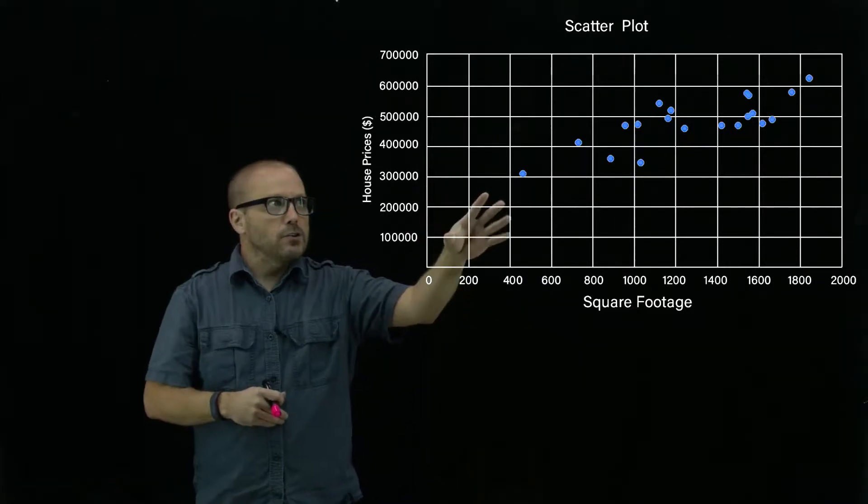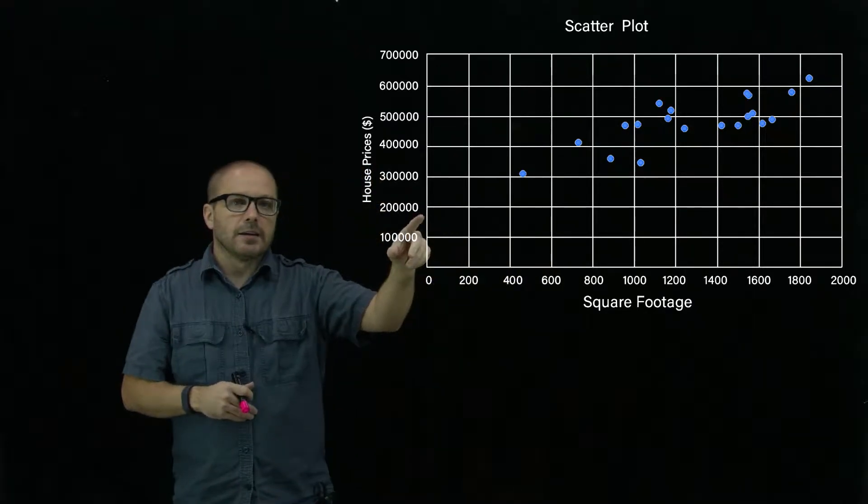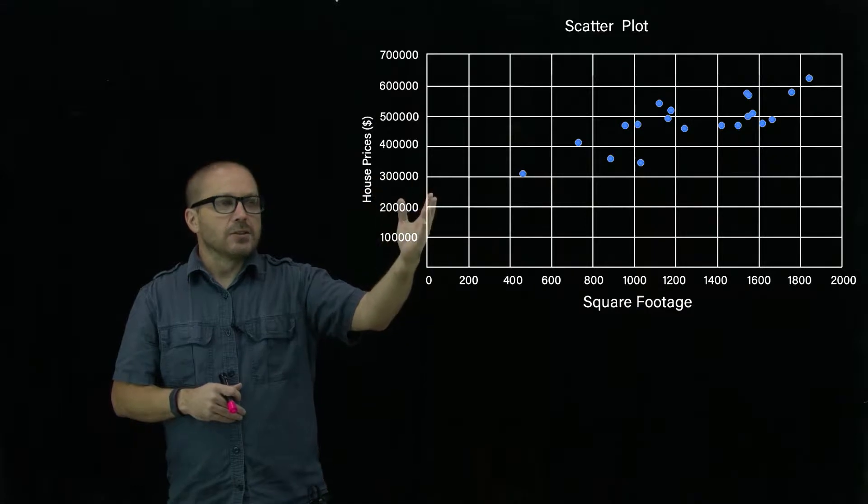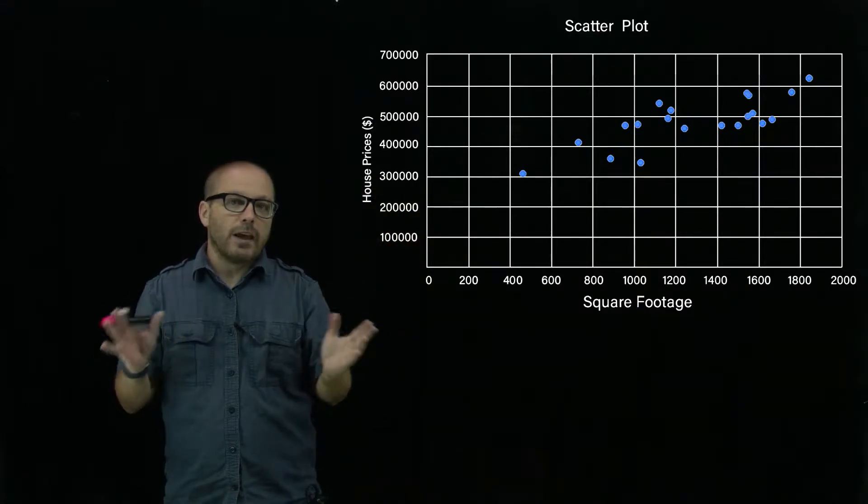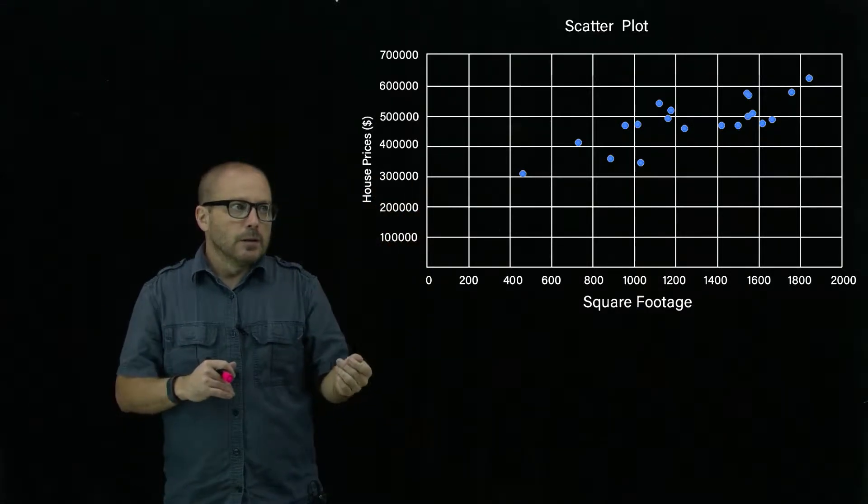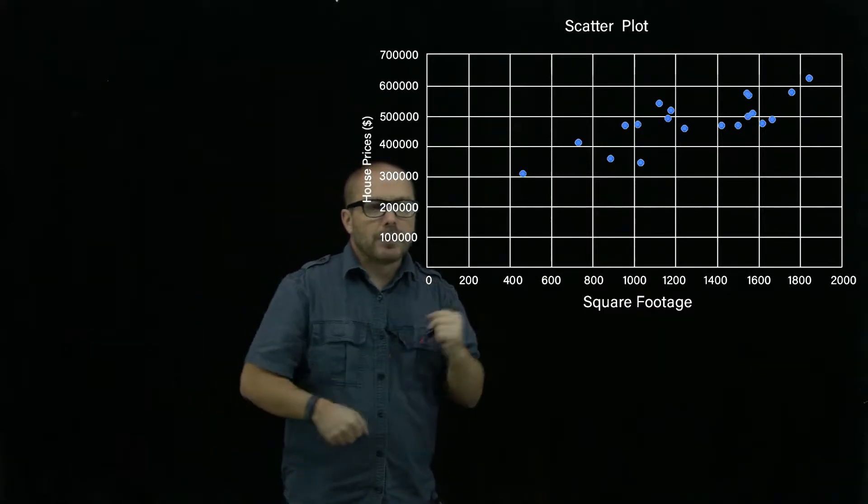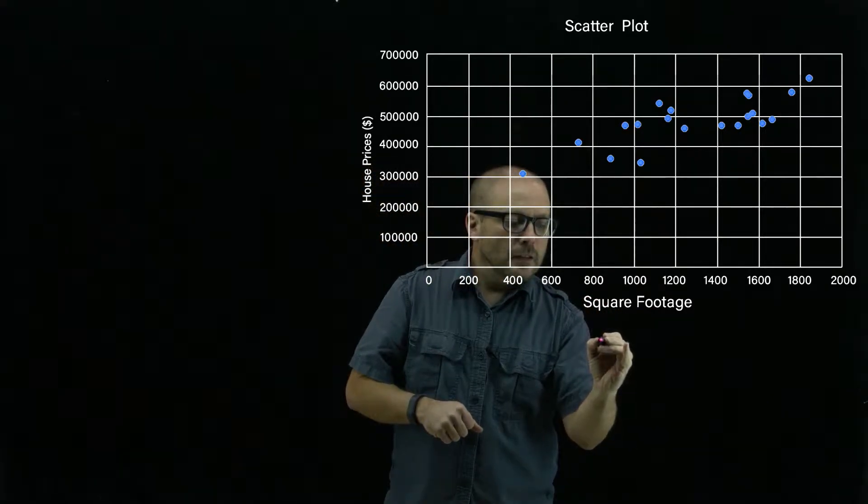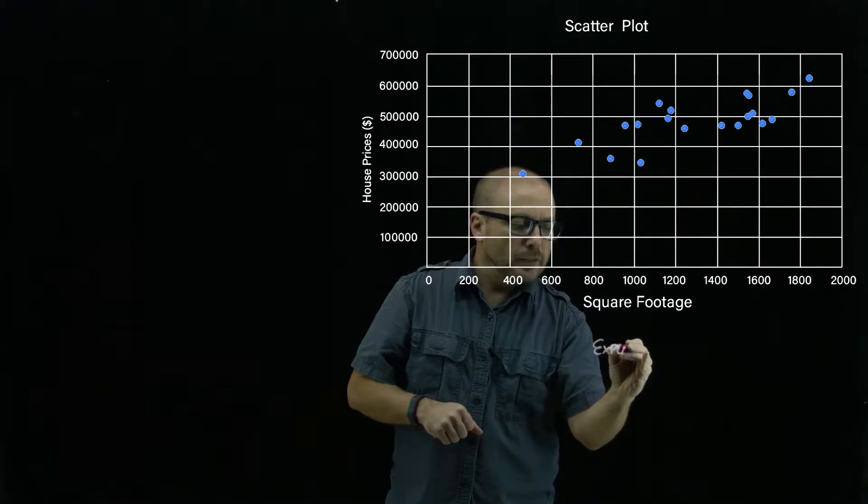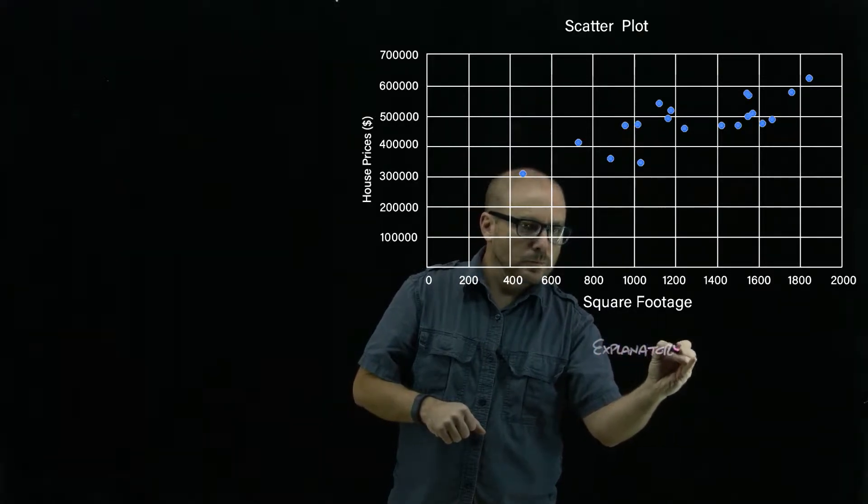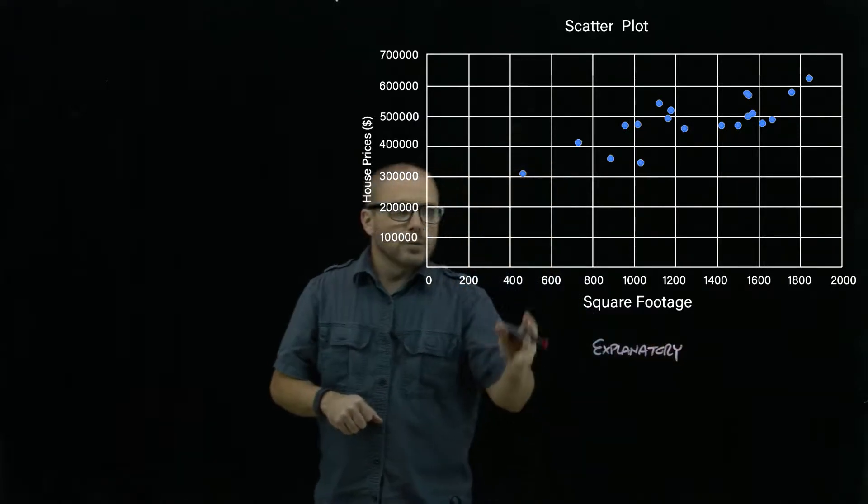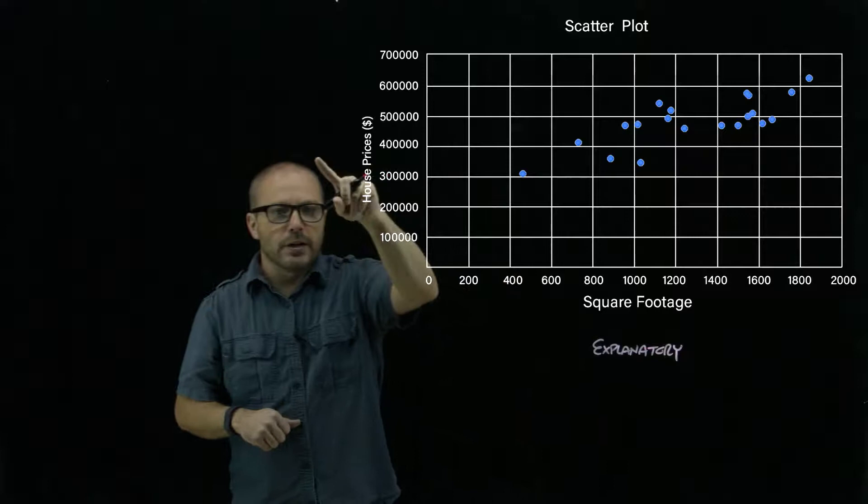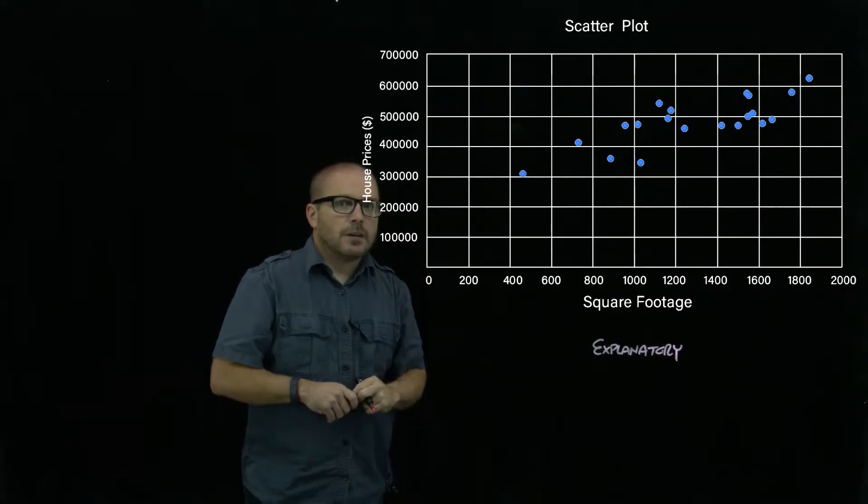The way we usually visually represent this sort of data is with what's called a scatter plot, and that allows you to see that XY relationship. We will typically put the explanatory variable over here—so in this case, we're seeing if square footage is a predictor of the house price.